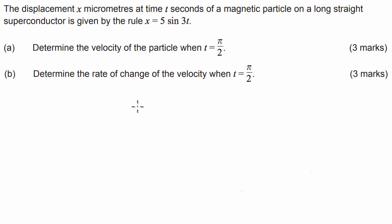G'day guys, we've got an applications of calculus question here today where we've got the displacement x micrometers at time t seconds of a magnetic particle on a long straight superconductor is given by the rule x equals 5 sine 3t.